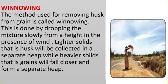Winnowing: The method used for removing husk from grain is called winnowing. This is done by dropping the mixture slowly from a height in the presence of wind. Lighter solids (husk) will be carried by the wind and collected in a separate heap, while heavier solids (grains) will fall closer and form a separate heap.